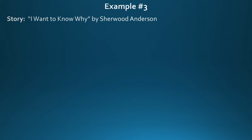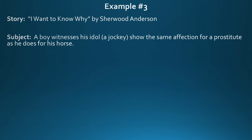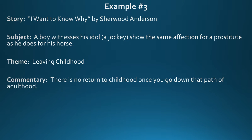Example number three is I Want to Know Why by Sherwood Anderson. This is about a boy who witnesses his idol — a jockey — show the same affection for a prostitute as he does for his horse. The theme is leaving childhood. This boy who has a great love of horse racing realizes that his adult idol sees it as something lustful, looking at both a horse and a prostitute with the same kind of lustful look. When the boy sees this, a part of him is destroyed — a part of him starts to think adult thoughts. Anderson's commentary is that there's no return to childhood once you go down that path of adulthood.